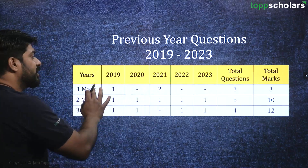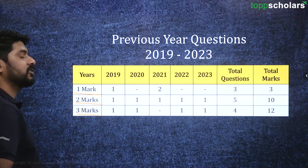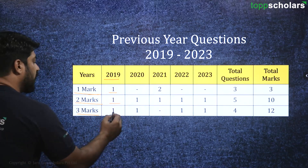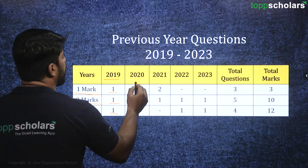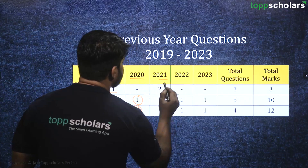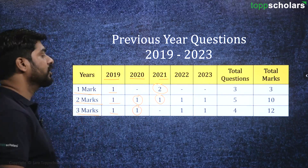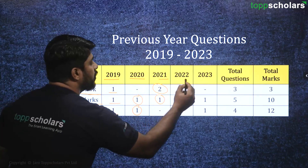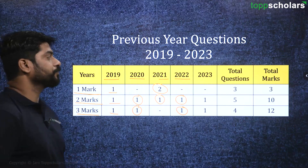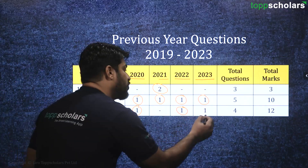Here is the statistical data. There are 1 mark questions, 2 mark questions and 3 mark questions that have been asked in the last 5 years. In 2019, there was 1 question for 1 mark, 1 question for 2 marks and 1 question for 3 marks. In 2020, there was 1 question for 2 marks and 1 question for 3 marks. In 2021, we had 2 questions for 1 mark, 1 question for 2 marks and 1 question for 3 marks. In 2022, there was 1 question for 2 marks and 1 question for 3 marks. In 2023, we had 1 question for 2 marks and 1 question for 3 marks.